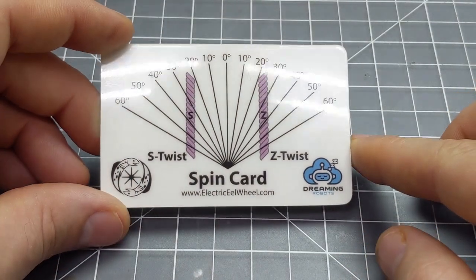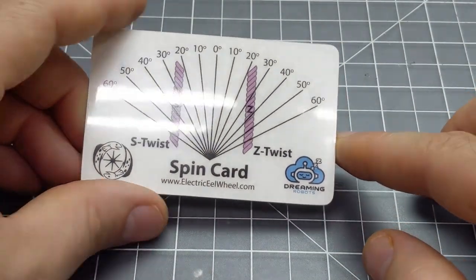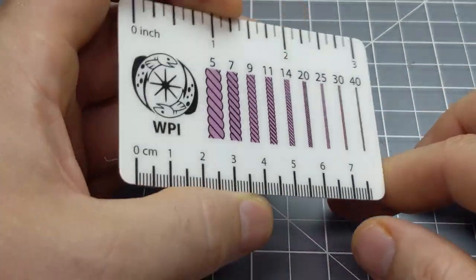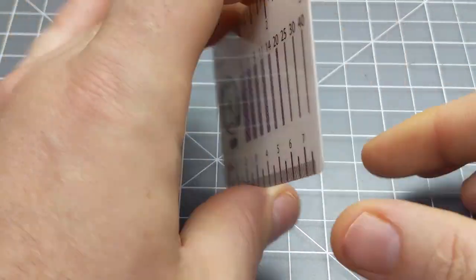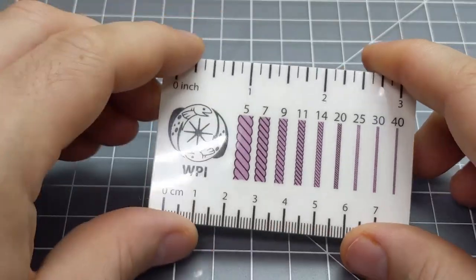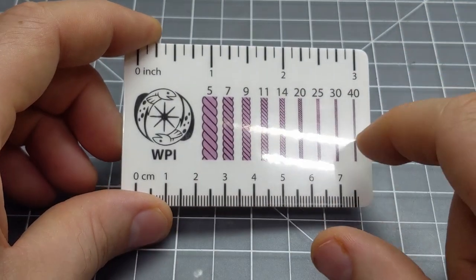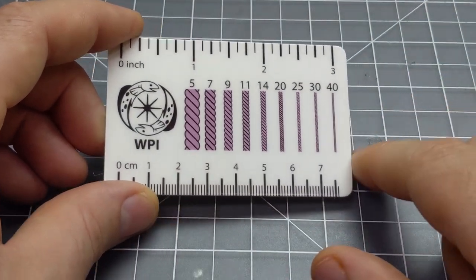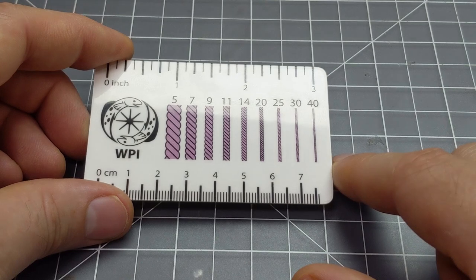Hello, today I'm going to be talking about the spin card. This is a card that I ship with every electric eel wheel. There's two sides to it and lots of different features on both sides, so I'll walk through what each of the different parts does and how to use them.